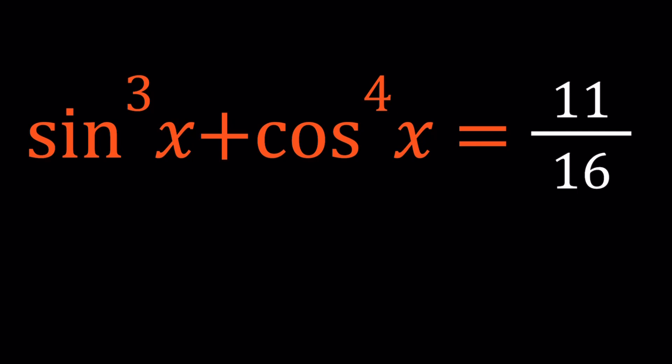First of all, notice that cosine is raised to an even power. This is also important if you're integrating trigonometric functions with odd and even powers — I also made a video on that a while ago. The strategy here is to take one function and turn it into the other. Since cosine x is raised to the fourth power, I can write it as cosine squared, squared.